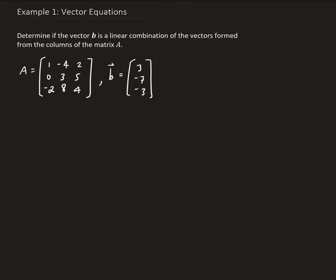We're going to call the first column V1, the second column V2, and the third column V3. These are all column vectors. And then we have vector B. We want to find out if the vector B can be written as a linear combination of V1, V2, and V3.